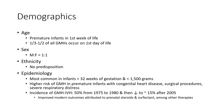Ethnicity shows no predisposition. Epidemiology: most common in neonates less than 32 weeks of gestation and less than 1,500 grams. High risk of Germinal Matrix Hemorrhage in premature infants is associated with surgical procedures and severe respiratory distress.